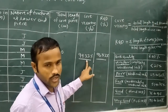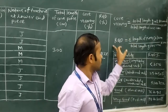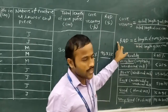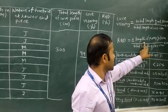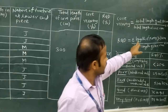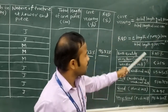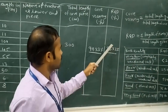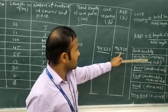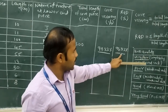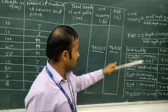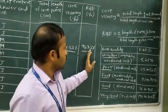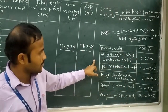After calculating core recovery, we calculate RQD — Rock Quality Designation. The formula for RQD is: the summation of the length of pieces greater than 10 centimeters, divided by the total length of the core run, multiplied by 100. After calculation, the RQD comes out to 91.33 percent. We then compare this RQD value with the standard classification chart.